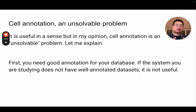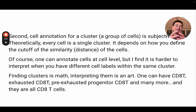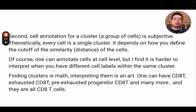First, you really need good annotation for your database. If the system you are studying does not have a well-annotated dataset, it doesn't make sense to use those automatic cell annotation tools — you still have to manually annotate those cell clusters based on the marker genes and your own understanding of the biological system. And second, cell annotation for a cluster or group of cells is subjective. Theoretically, every single cell is its own cluster. It really depends on how we define the similarity or distance of the cells within the same cluster. Of course, you can annotate cells at a single-cell level, but it's a bit harder to interpret when you have different cell labels within the same cluster.